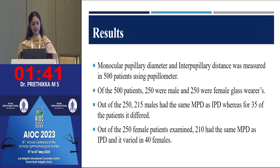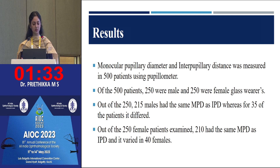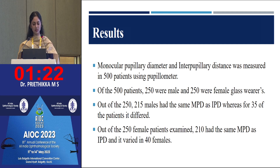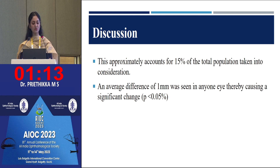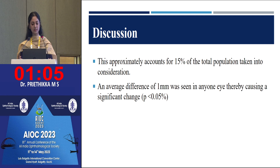Monocular pupillary distance and interpupillary distance were measured in 500 patients — 250 males and 250 female glass wearers. Of the 250 males, 215 had the same MPD as IPD, whereas for 35 it varied. Of the 250 female patients, 210 had the same MPD as IPD and it varied in 40 females. This approximately accounts for 15% variation in the total population, with an average of 1 mm difference seen in any one eye, thereby causing a significant change.